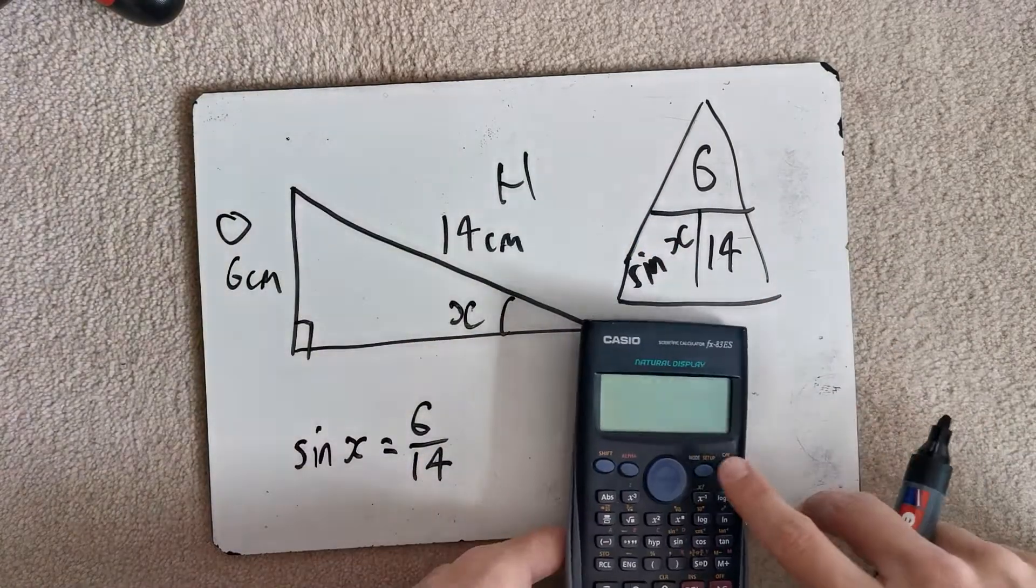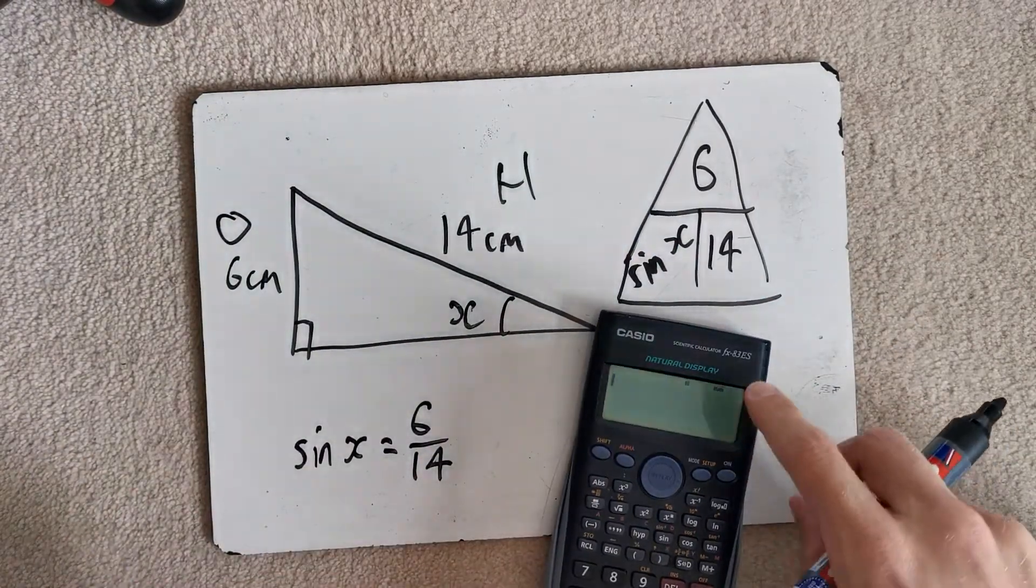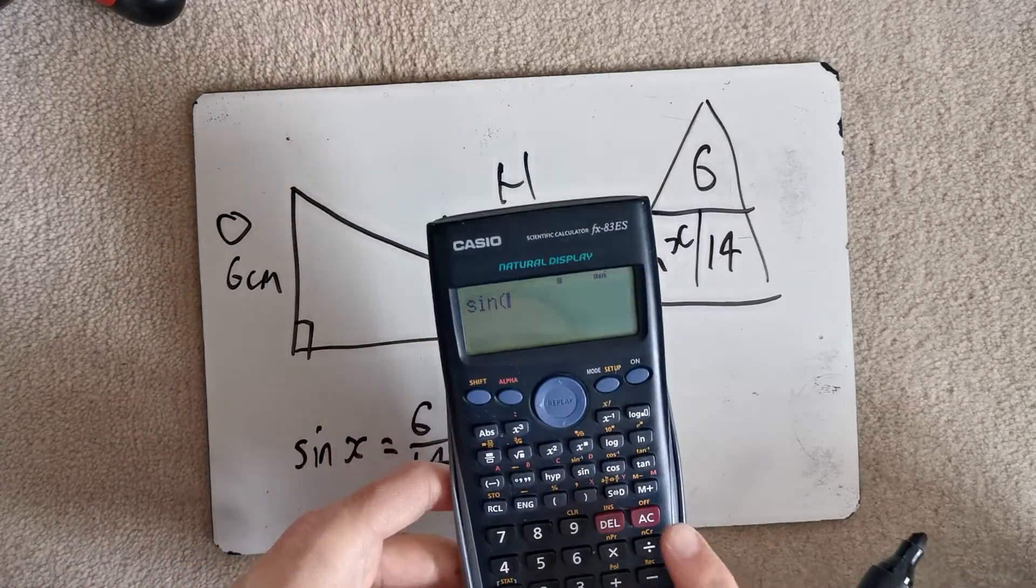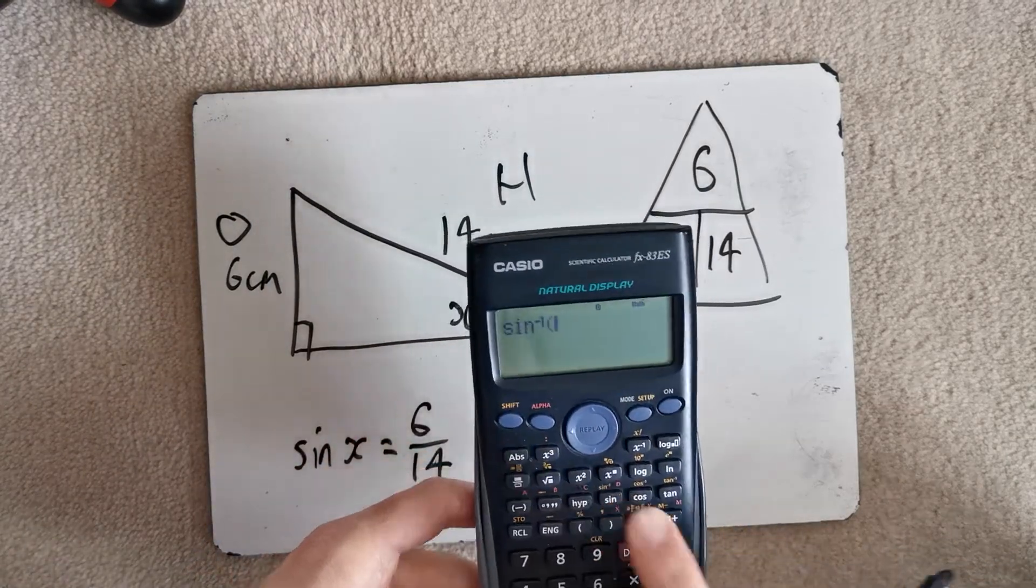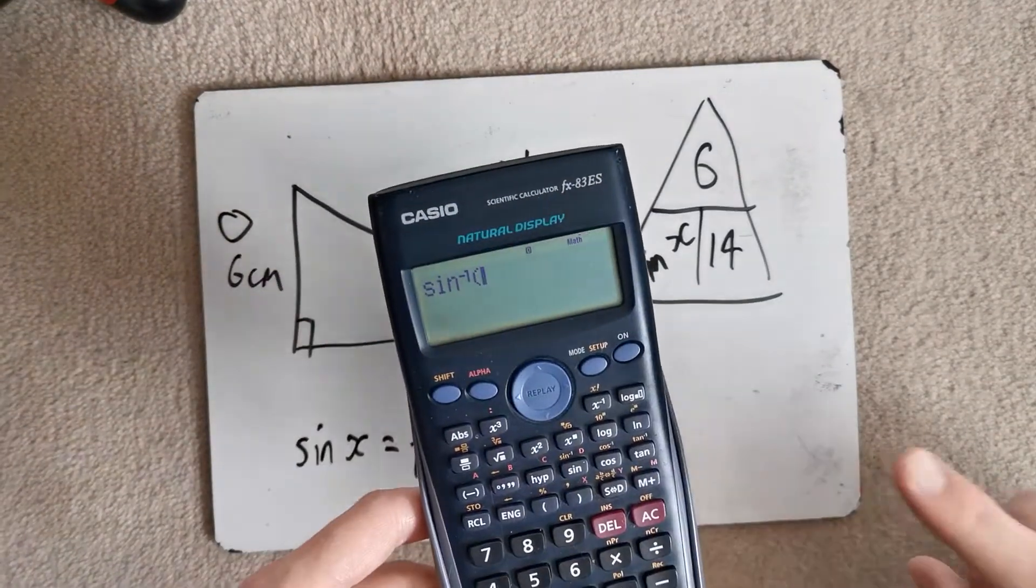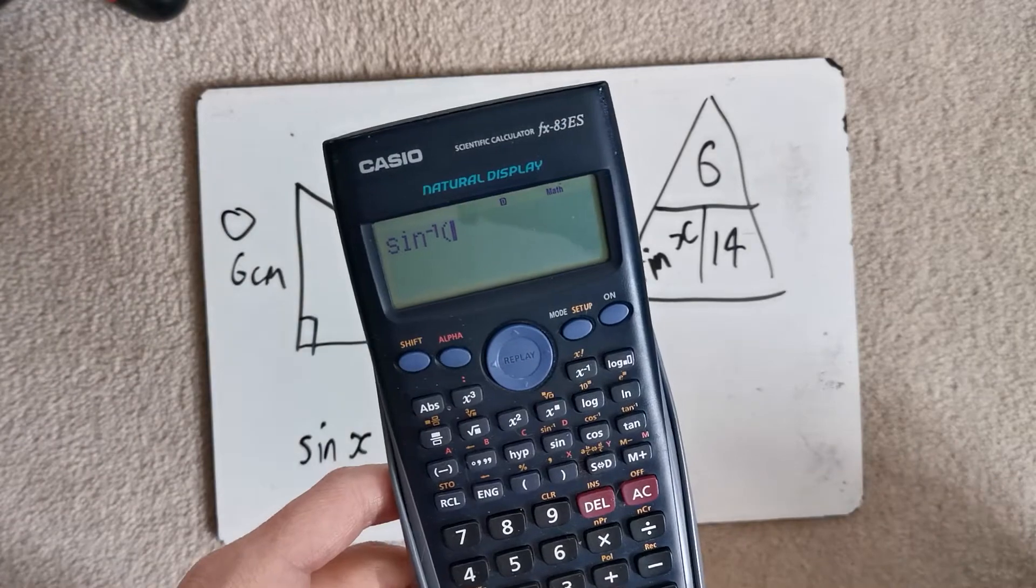That's why we've got to use one of these. So instead of using the normal sine button, where it just comes out looking like that, we've got to do shift sine. That means inverse sine. That is the opposite of what it did in the past.